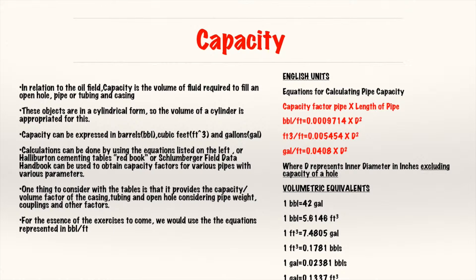The calculation can be done in various ways, either using your capacity factors from a field data book or using these equations and plugging in your diameters for each casing, tubing, or pipe. Your capacity factors can be found in many oil and gas service companies' field data books. Halliburton has their famous red book, Schlumberger has a field data book, Baker Hughes and Magnum Oil Tools also have field data books. One thing to consider with the field data books is you have to consider the casing and tubing weight, the pipe weight, and they also give you considerations for couplings and many other factors.